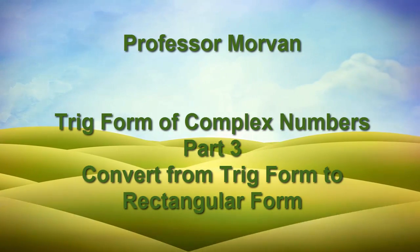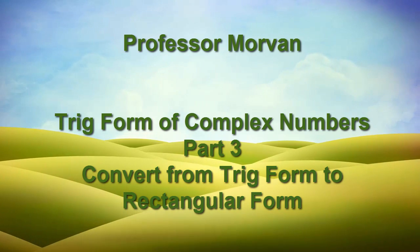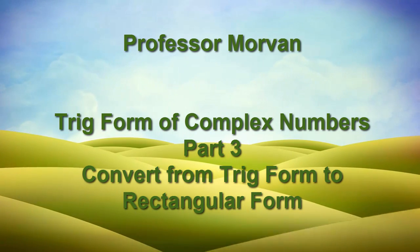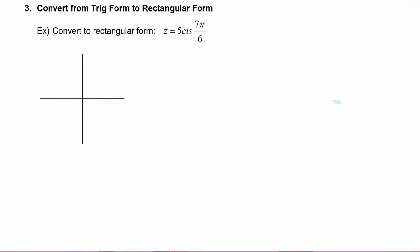In part three of our lesson on the trig form of complex numbers, you will learn how to convert from trig form to rectangular form. In this example we have to convert to rectangular form: z is equal to five cis seven pi over six. Right now z is in trig form and we want to change it to rectangular form.